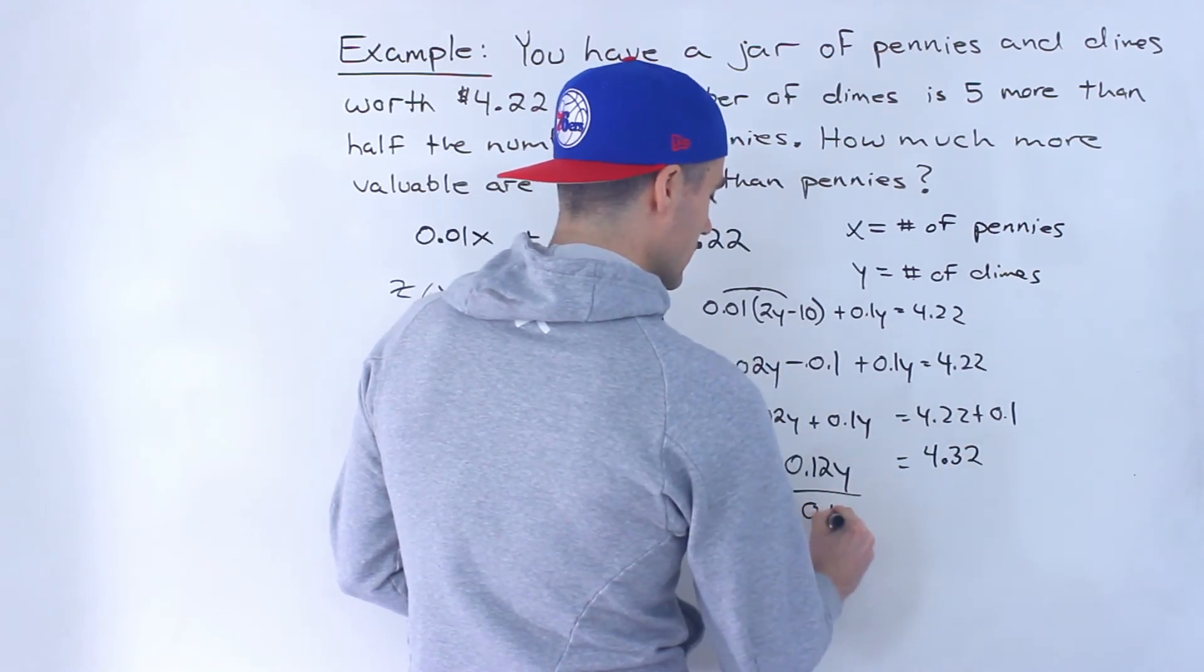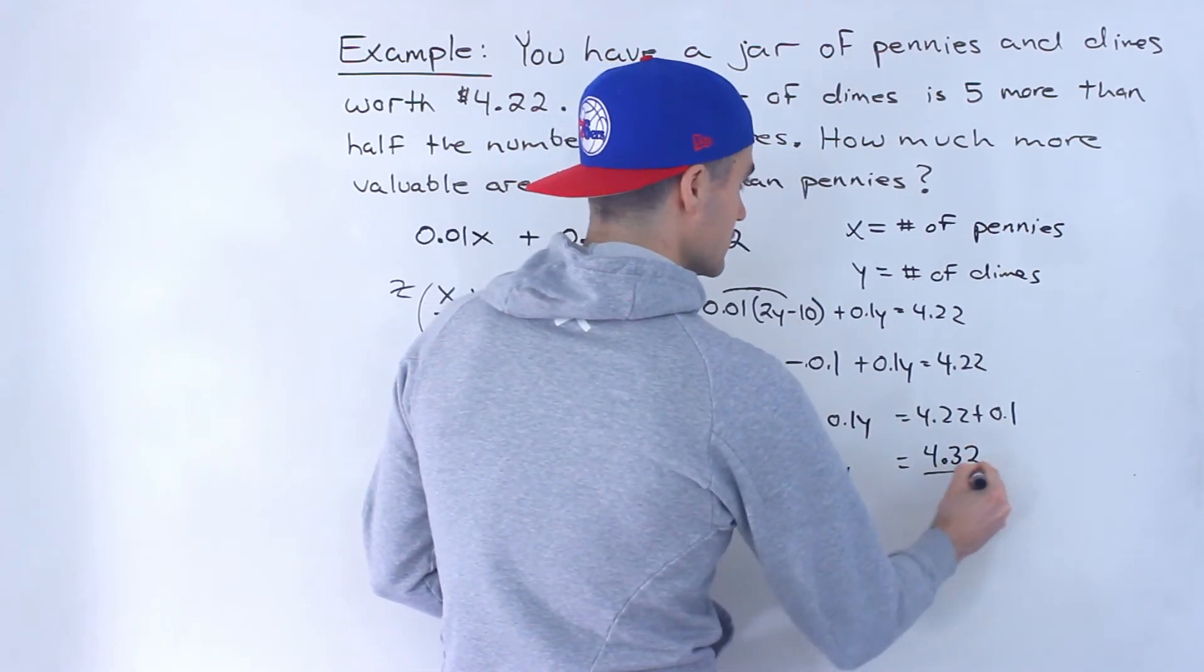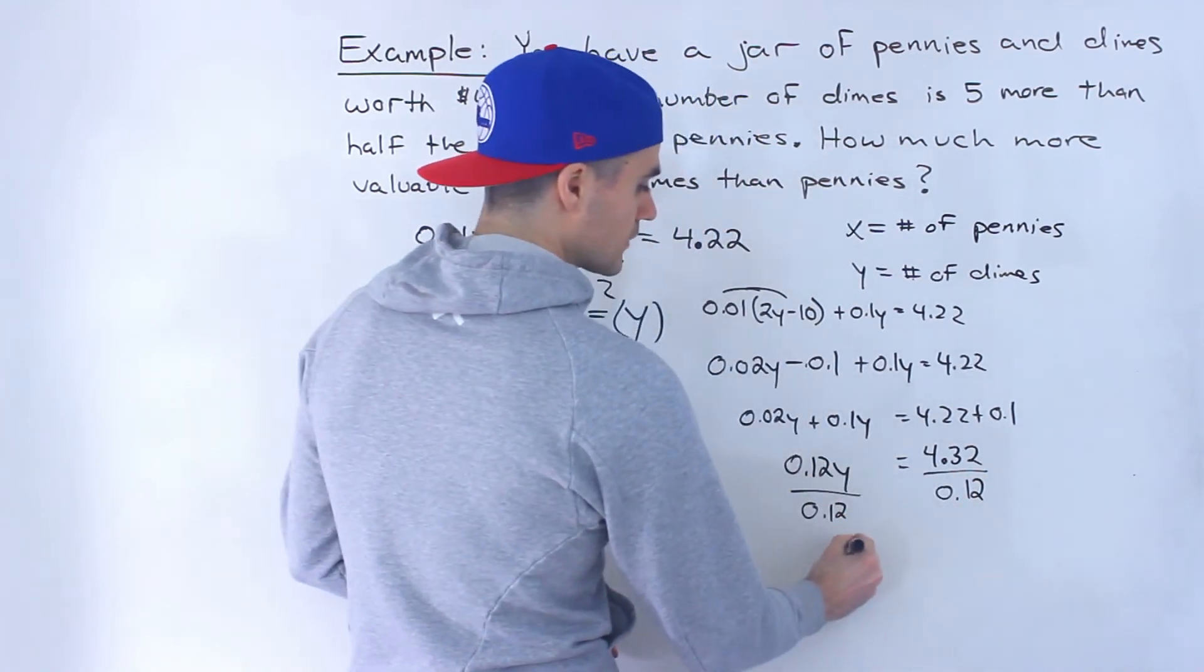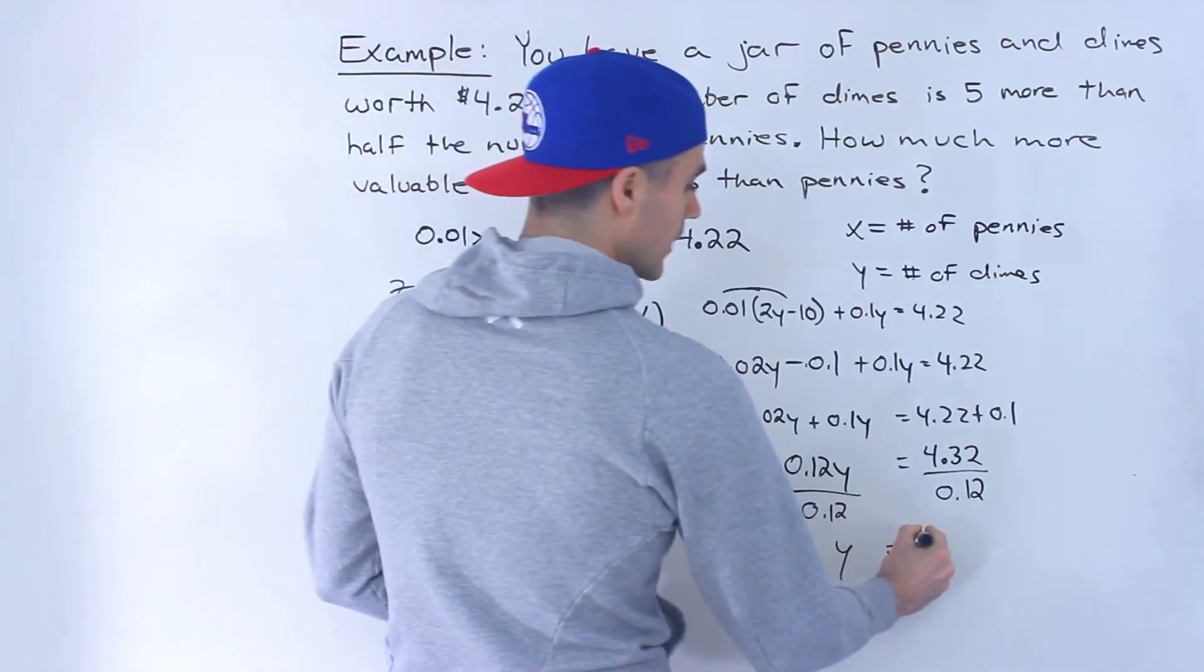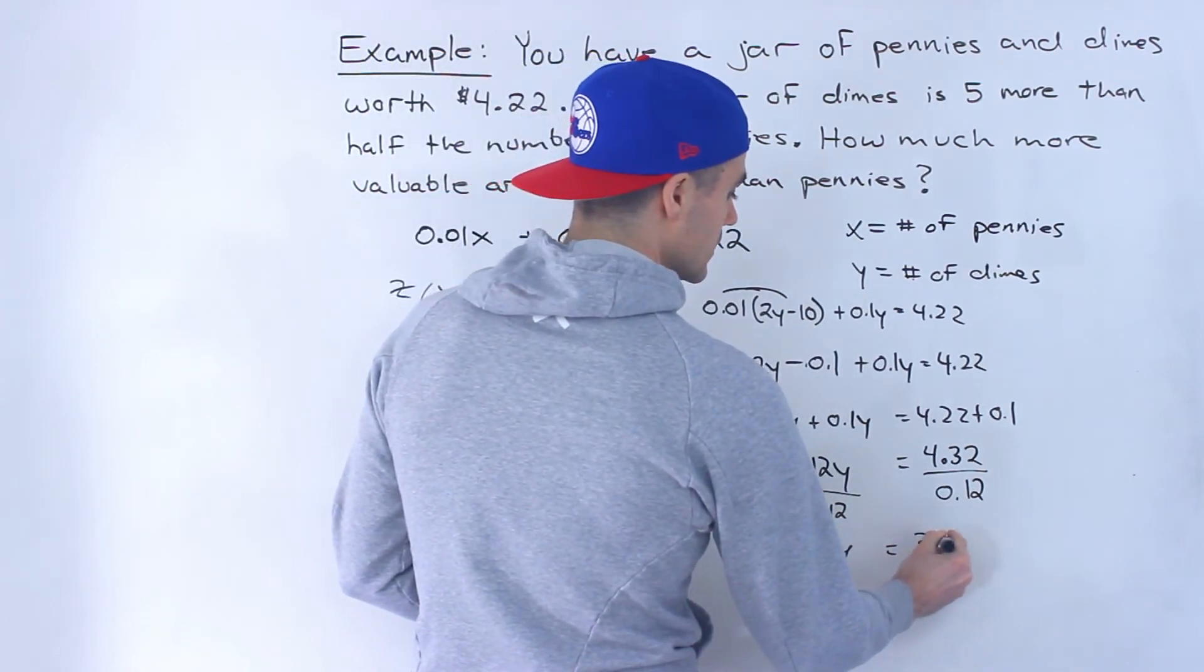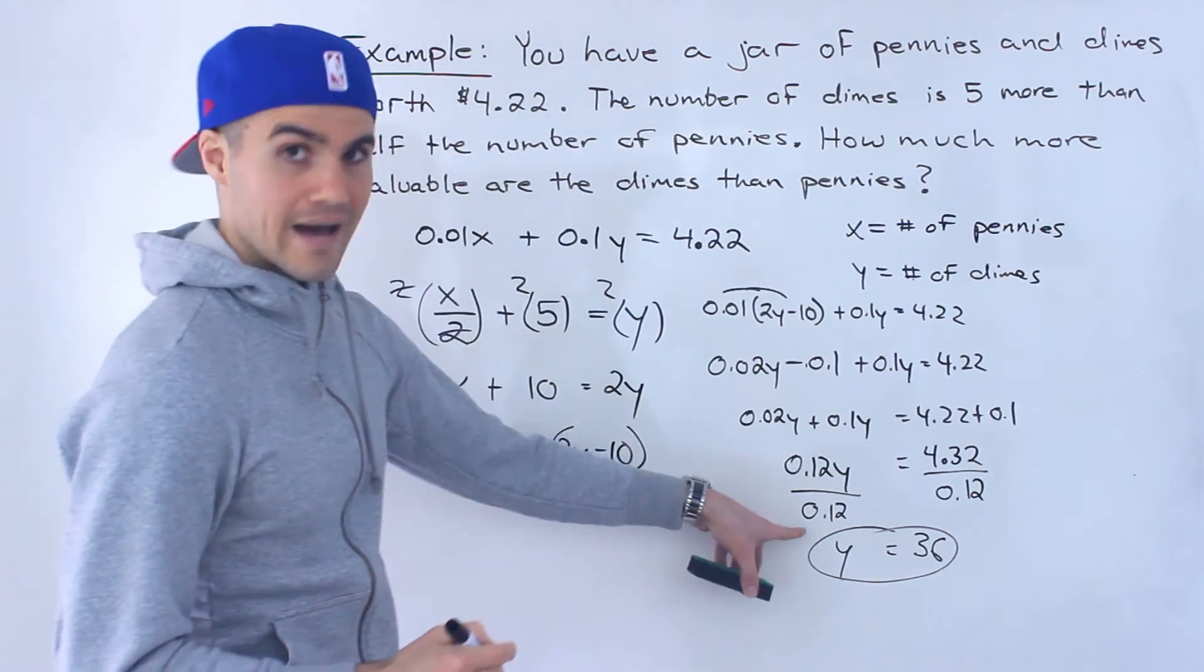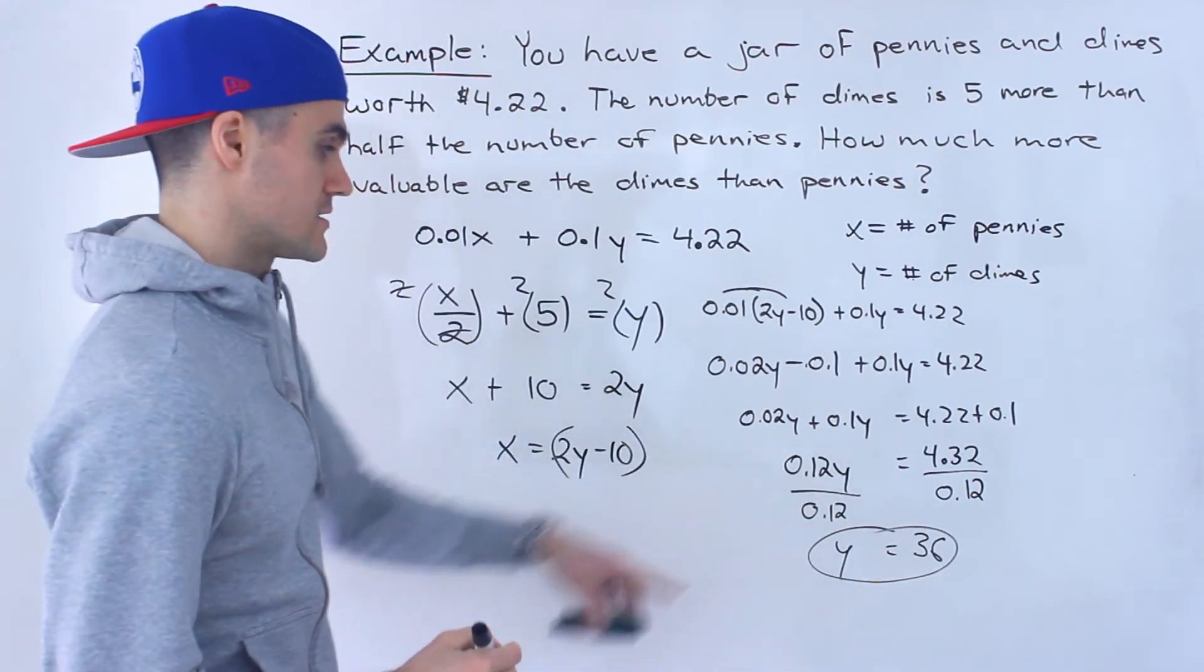And then divide both sides by 0.12 to get the y by itself. And when you do that, what you would end up with is 36. So the y value is 36.